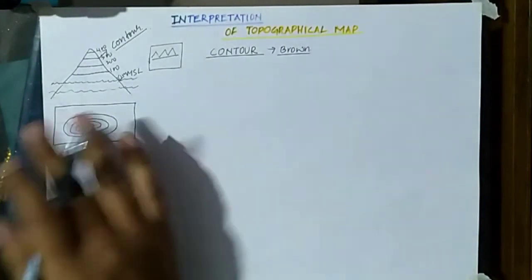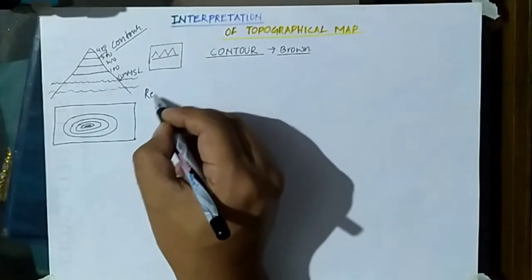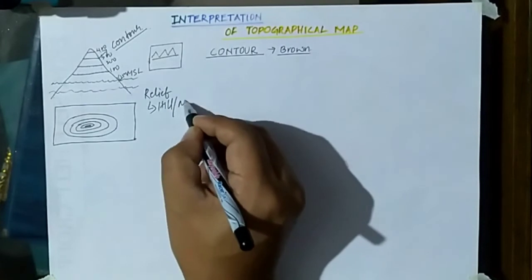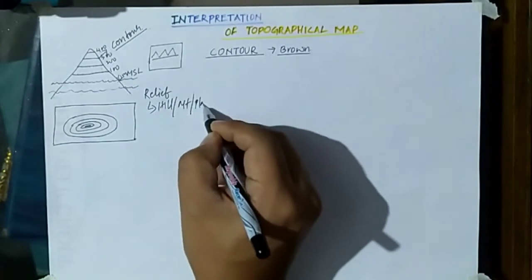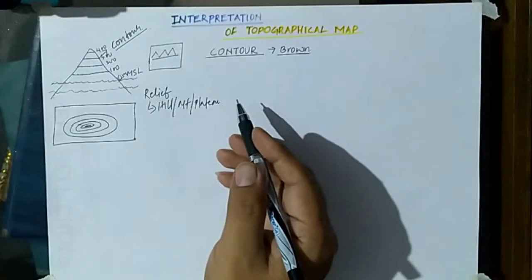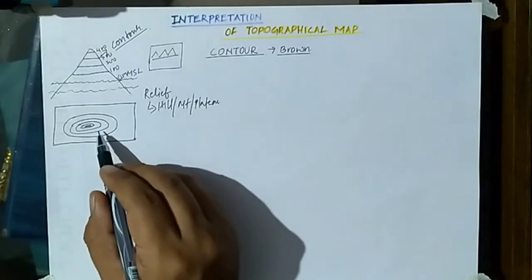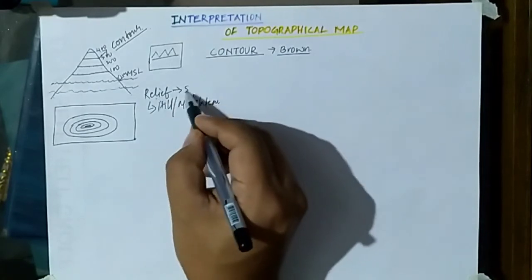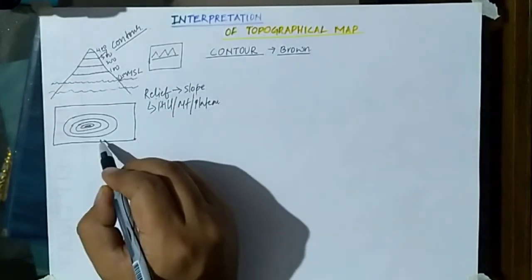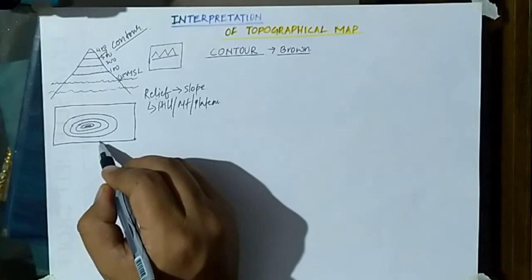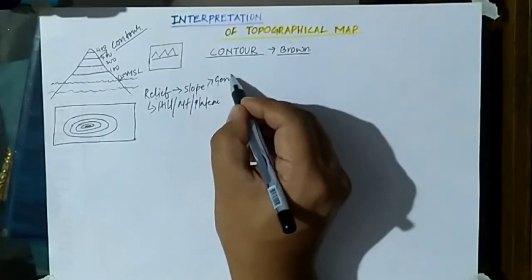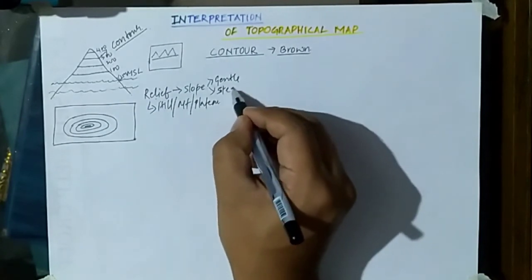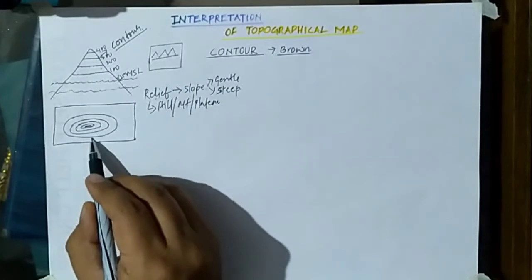In this way, elevated relief features — whether a hill, mountain, or plateau — will be identified with the help of contour lines. Not only the relief, but the slope of the relief will also be represented by contour lines, whether it is a gentle slope or a steep slope.